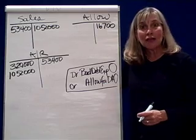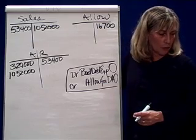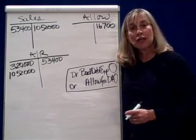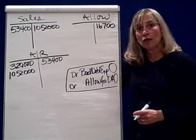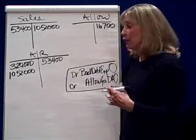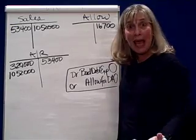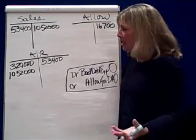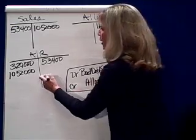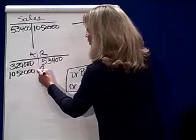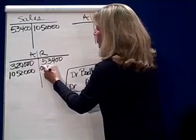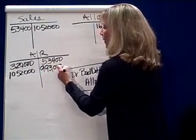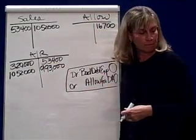In part C, we collected from customers $993,000. If we collected it, we debit cash — that's a good thing — and credit accounts receivable $993,000, because the customer paid.